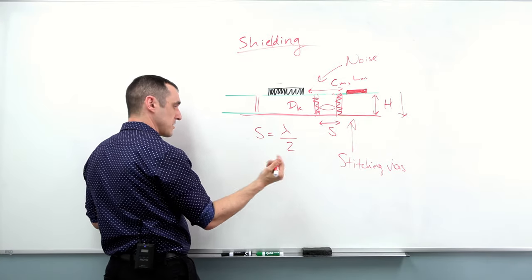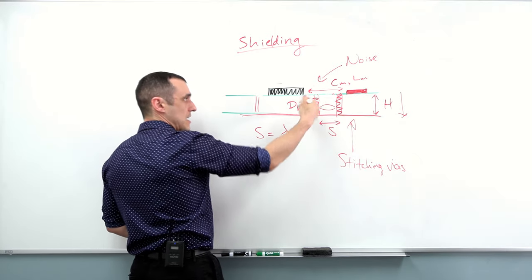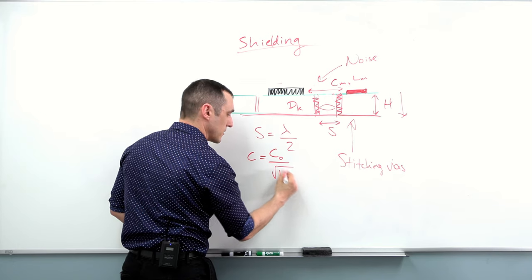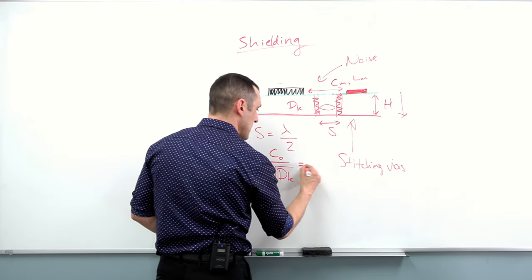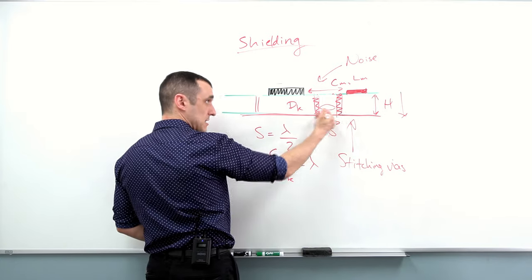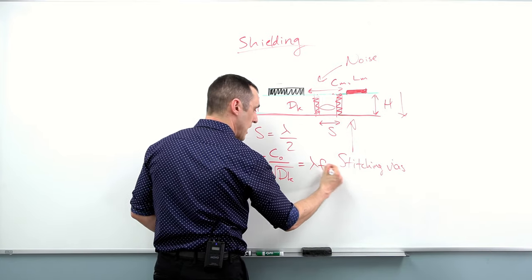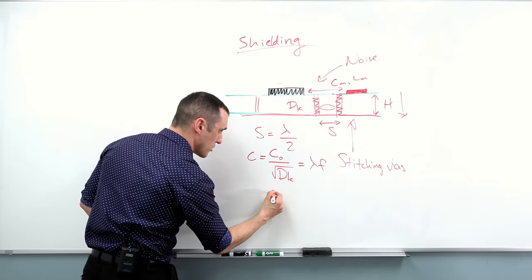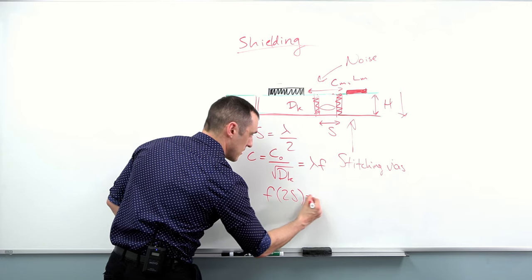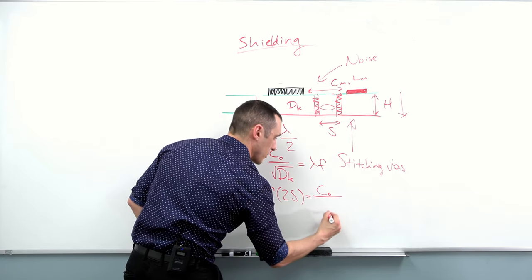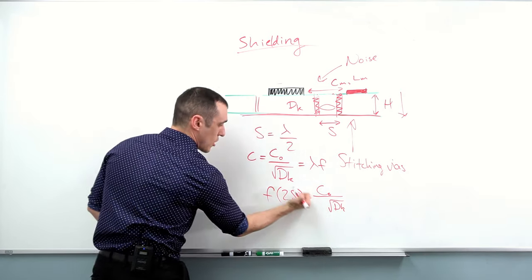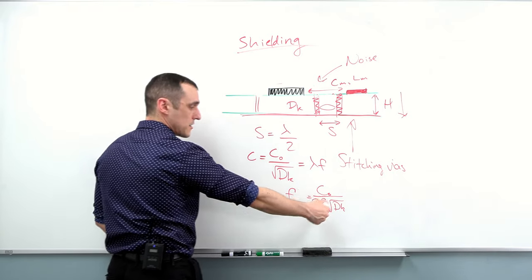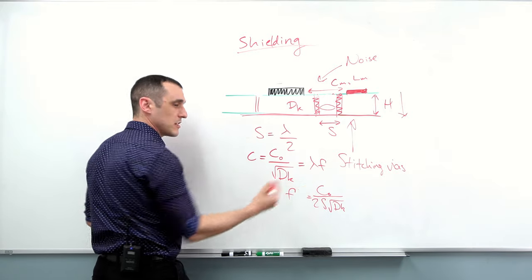So what exactly is the half-wavelength we're talking about? The speed of light inside the substrate is just the speed of light in vacuum divided by the refractive index, or the square root of Dk. And that is equal to the wavelength inside of this structure multiplied by the frequency. Substituting lambda equals 2s into this equation gives f times 2s equals c_0 over the square root of Dk.